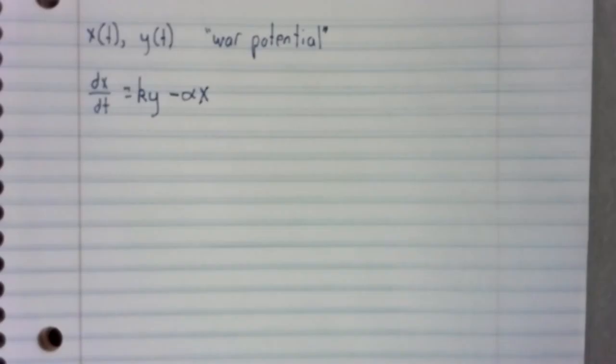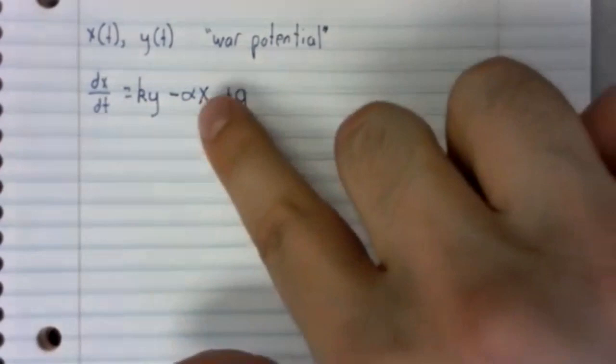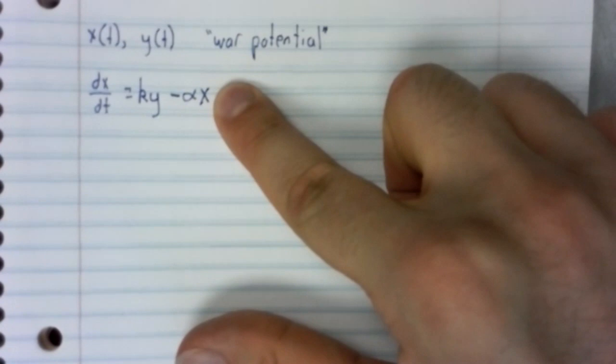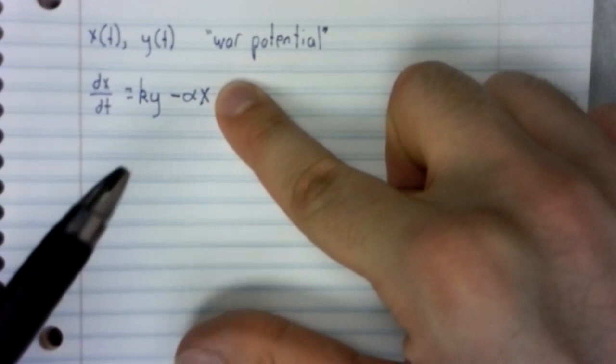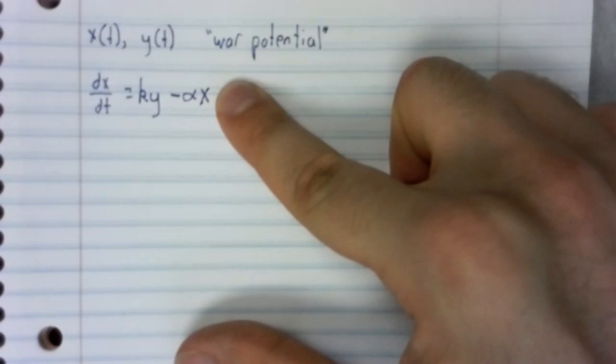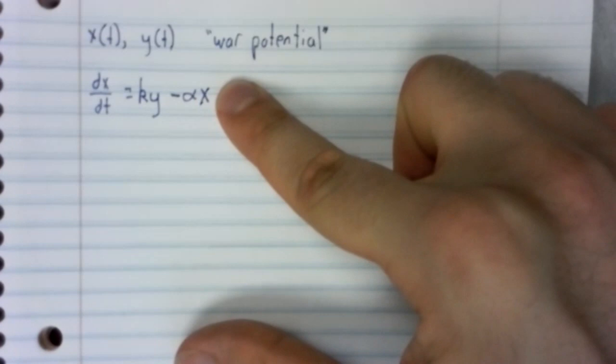But there will also be what we call a grievance term, g. So far, the only positive term we have here is a response term. Nation x will build up its military, but only in response to nation y. But we're assuming that these nations are hostile and perhaps on the brink of war. In that situation, nation x will build up its military no matter what it sees nation y doing. That's represented by this g.